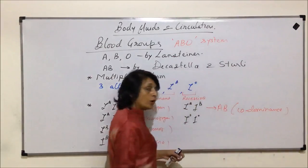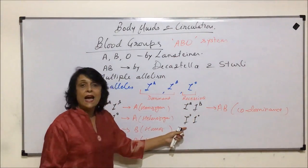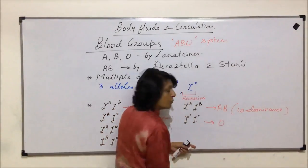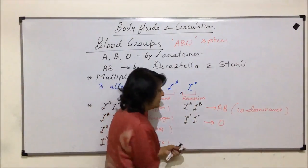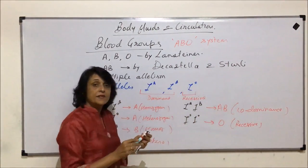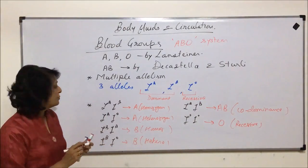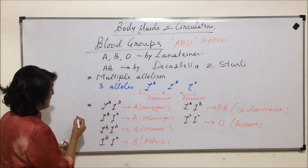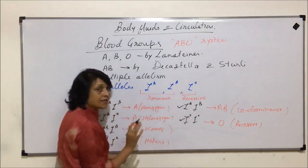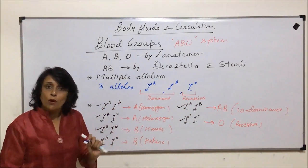In codominance, both genes are dominant and expressing themselves. IO IO is completely recessive, so this gives blood group O. Both genes are recessive. Now let us count the genotypes — the genetic makeup: there are six possible genotypes.